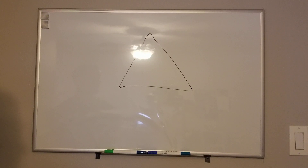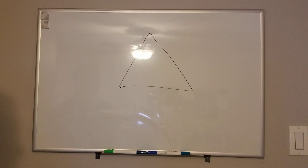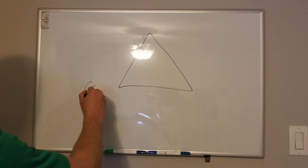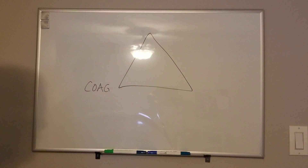This is what causes the majority of trauma deaths. Trauma is the primary cause of death in people ages 1 to 44, and most of those trauma deaths occur because of hemorrhagic shock, hypovolemic shock, or loss of blood volume. The three parts of the lethal triad are: first, coagulopathy, which means your coagulation factors aren't working as well as they should.